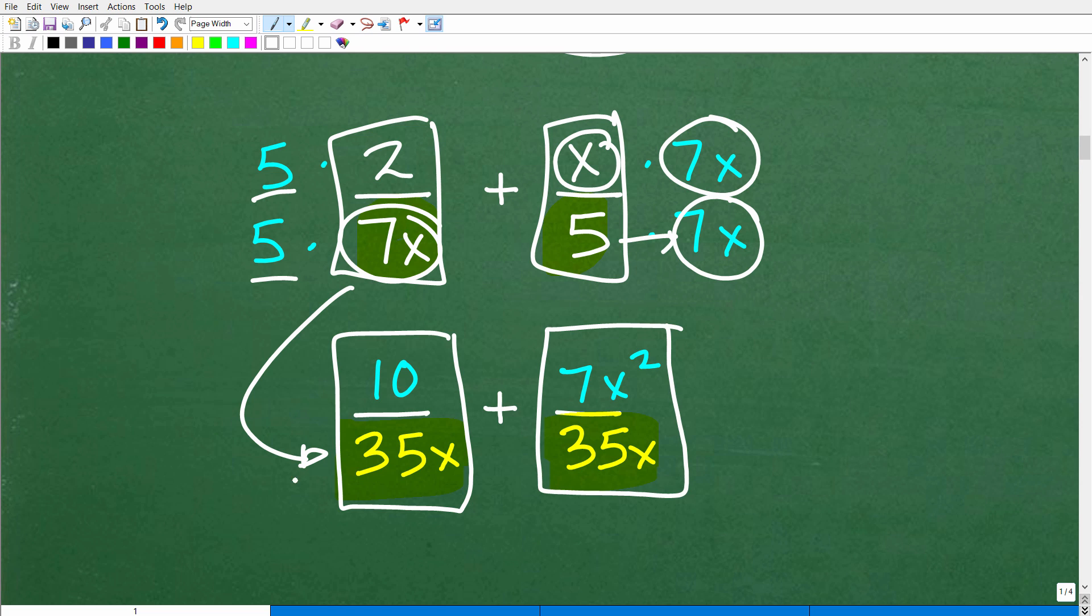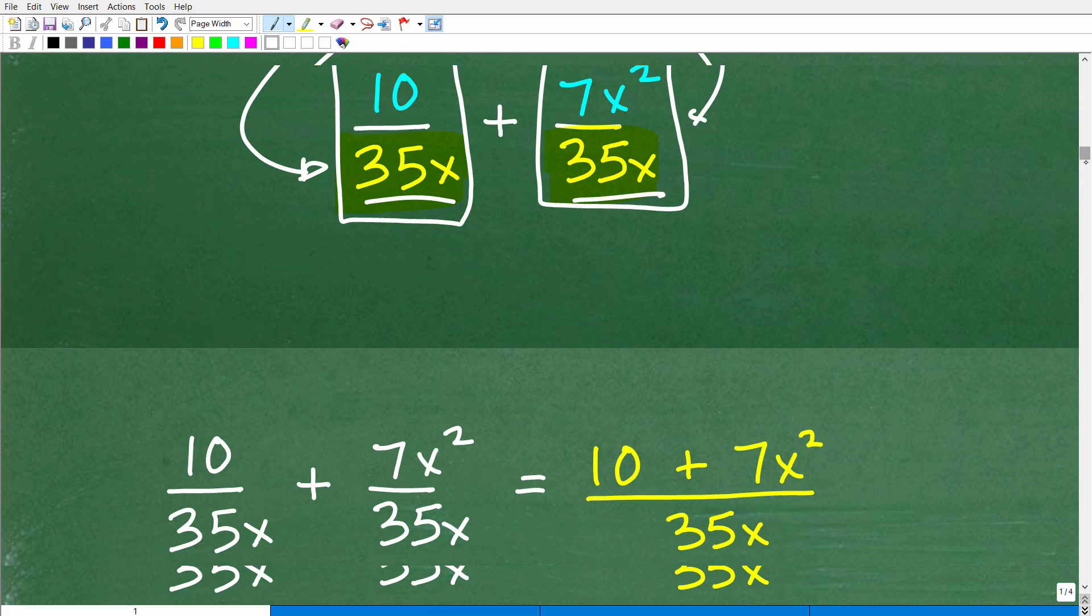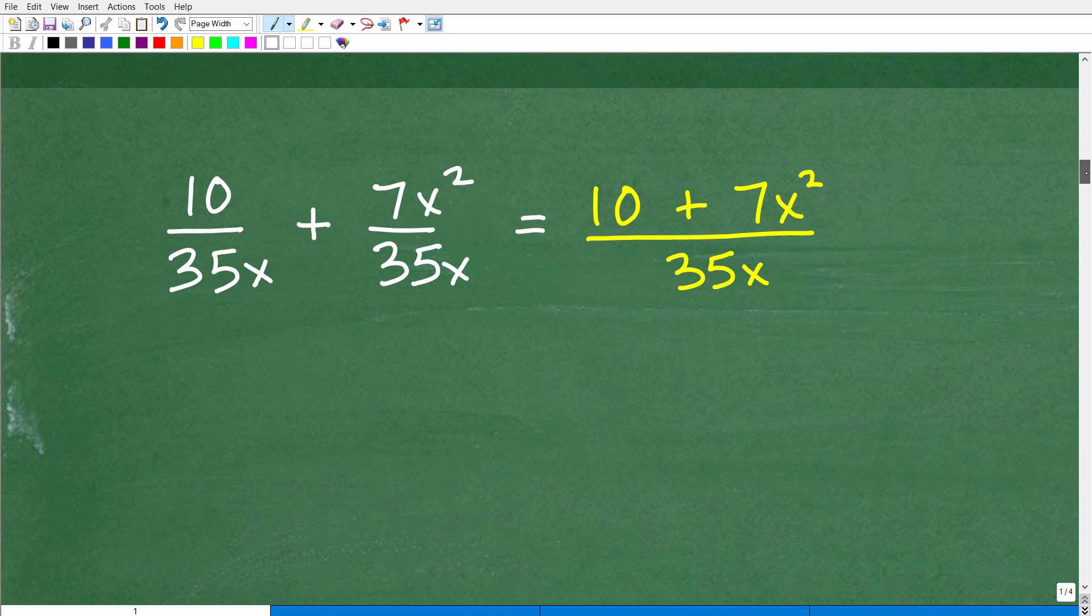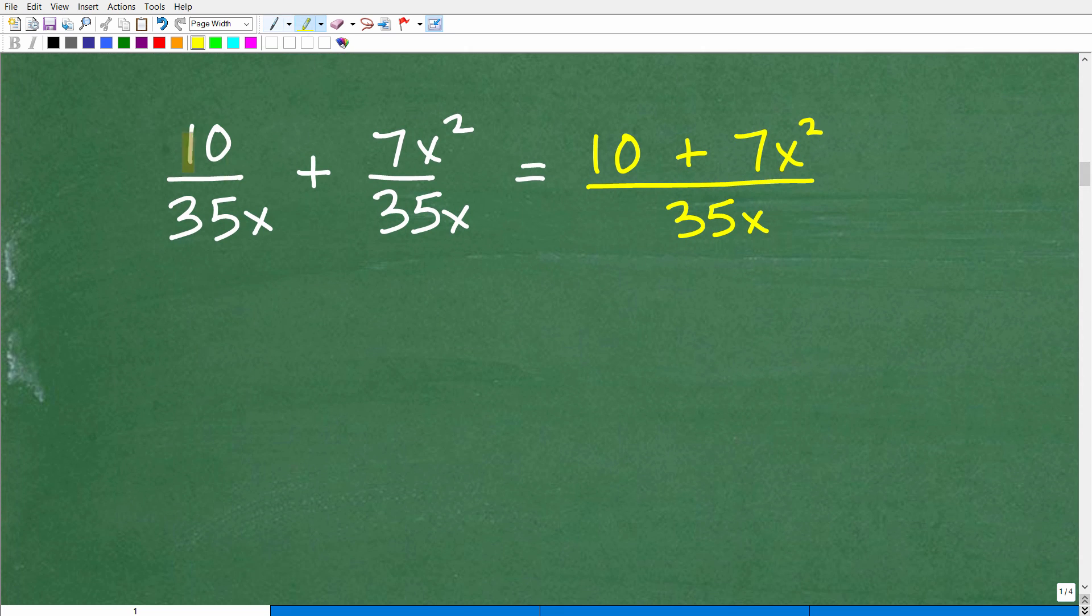Okay, so now we actually have two denominators that are exactly the same. So we're ready to add this up. So let's go ahead and take this to our last and final step here. So 10 over 35x plus 7x squared over 35x is going to be 35x. And we're just simply going to add the numerators, 10 plus 7x squared. And that's it.